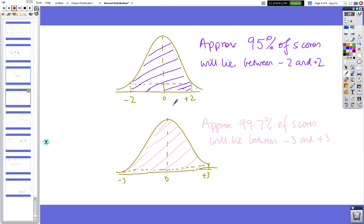When you have plus or minus 2, you have 95%, and when you have plus or minus 3, you have 99.7%. Most of the scores—it would be very rare to get above or below plus or minus 3.